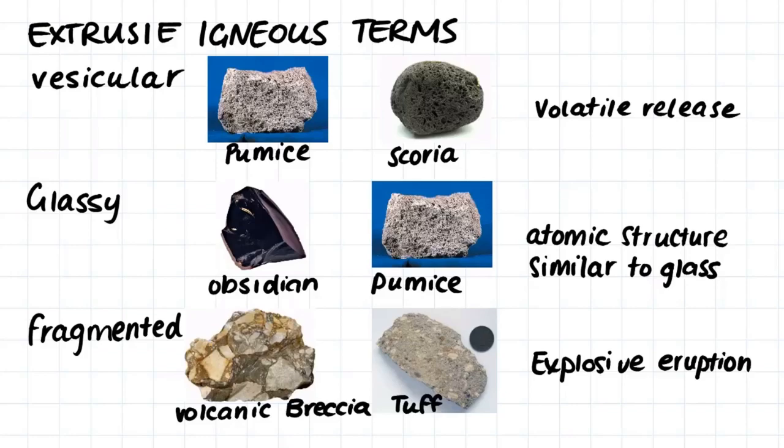The rapid cooling of molten rock produces an atomic structure similar to that of glass. Finally, we have fragmented igneous rocks, which form because of explosive eruptions. These fragmented rocks include volcanic breccia and tuff, and they are formed of broken-up pieces of exploded rock, volcanic ash, and lava.